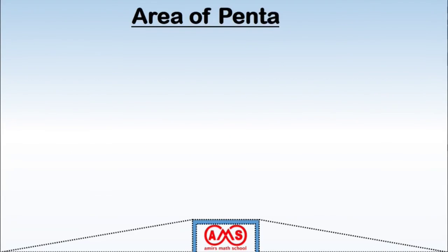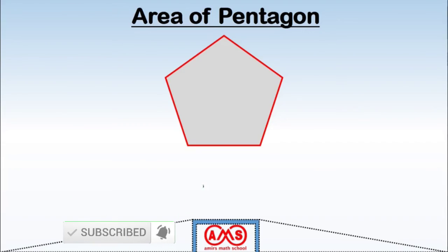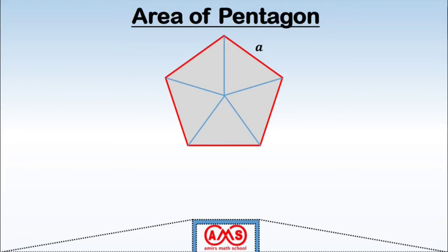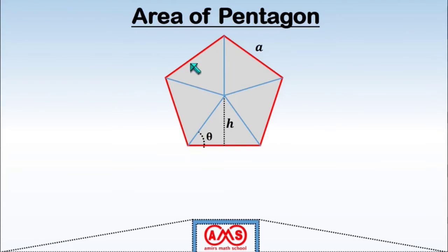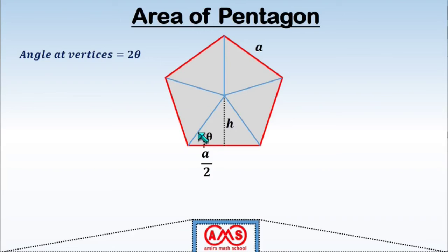Now let's find the area of a regular pentagon. We divide this regular pentagon into five equal isosceles triangles. Taking one such triangle: this is the interior angle at the vertex of the triangle, and this is the height. Since the pentagon is symmetric, this base side must be half of the full side, that is, A/2. The angle at the vertex of each triangle is 2θ, so the total angle at all five vertices is 5 times 2θ, which is 10θ.